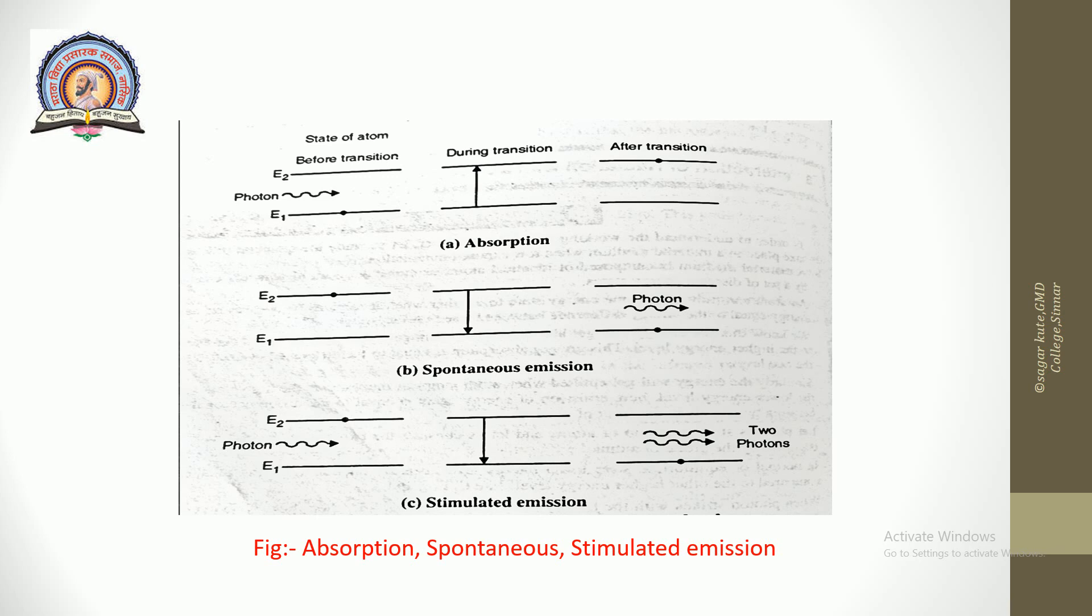These two identical photons induce two more photons in stimulated emission, thus giving four photons in all. These four in turn generate four more photons and so on. Thus the number of photons builds up in an avalanche. The combined stimulated emission from samples of large numbers of atoms leads to amplification of light.